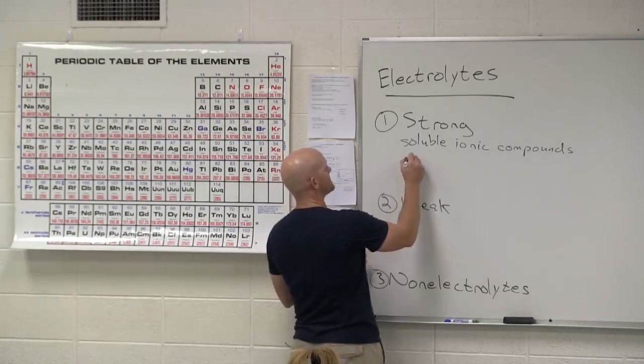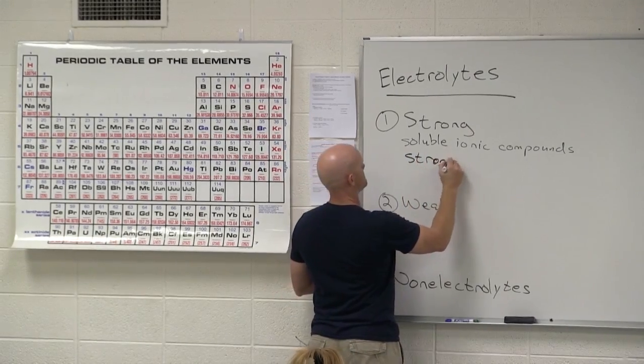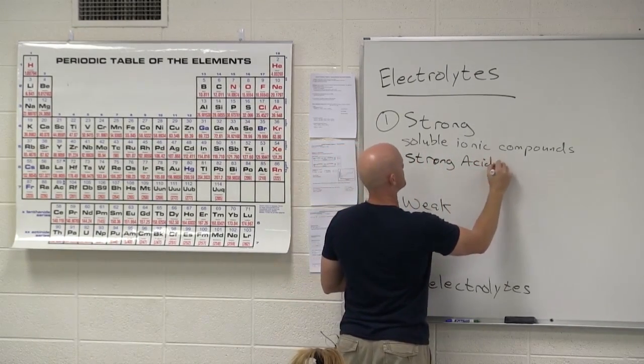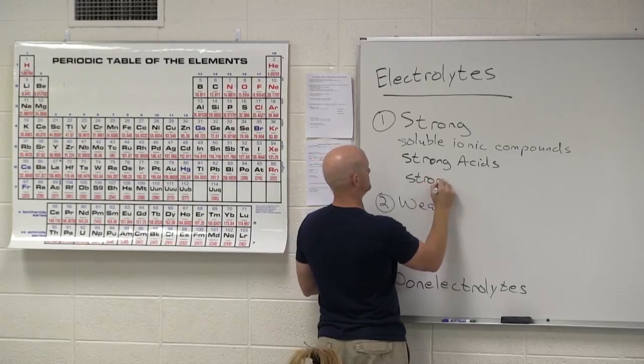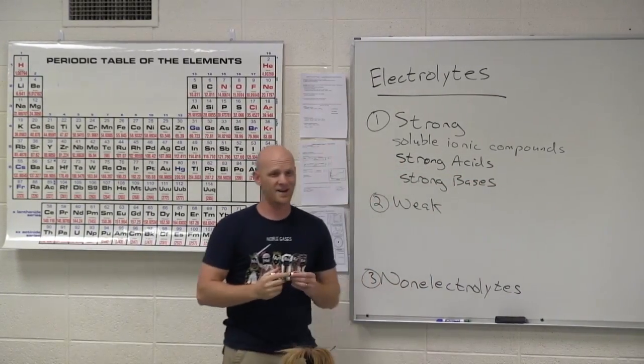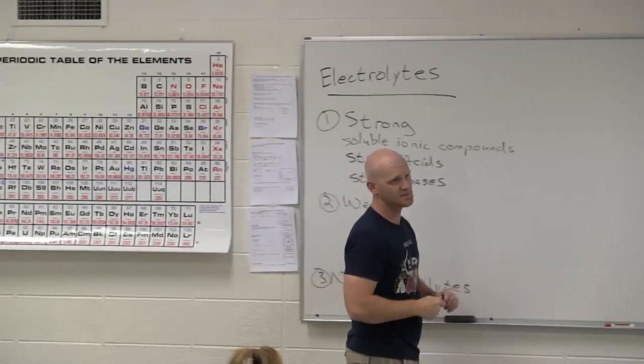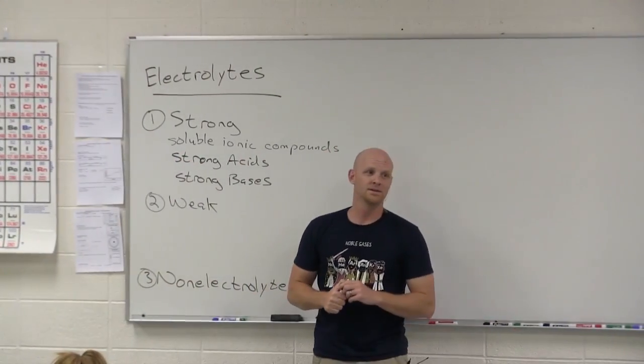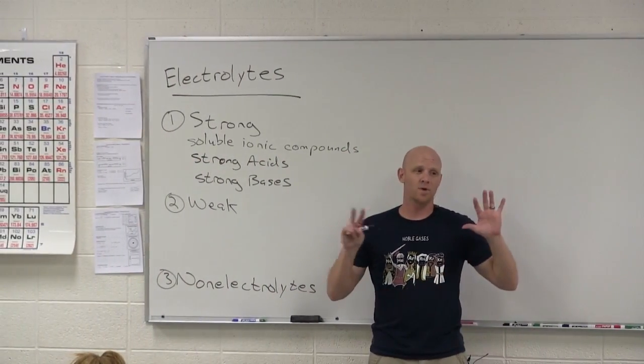All right. Your other strong electrolytes are your strong acids and your strong bases. How many strong acids are there that you have to be aware of? Seven. Seven. And you need to memorize them.